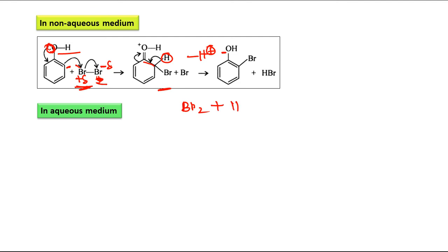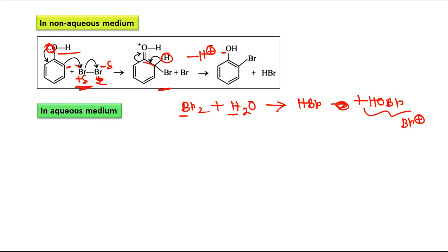In aqueous medium, bromine reacts with water to form HBr and HOBr. In HOBr you can see that there is a Br+ — that is, HO⁻Br⁺ — meaning bromine now carries a fully developed positive charge. This makes it a strong electrophile.